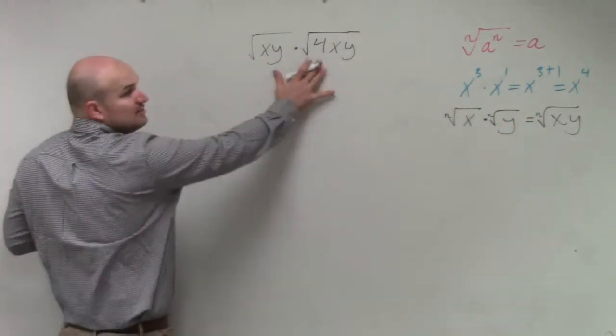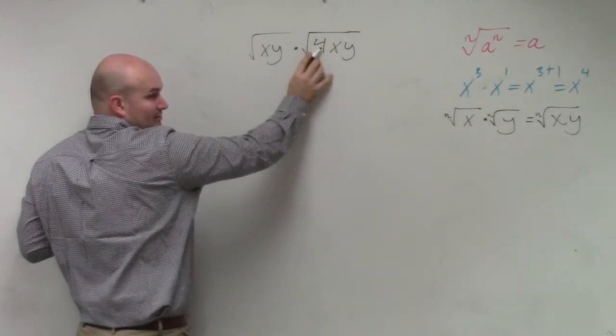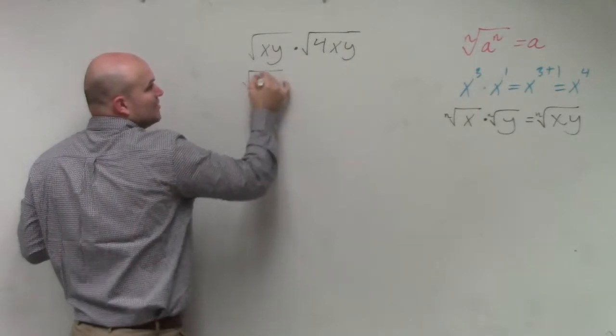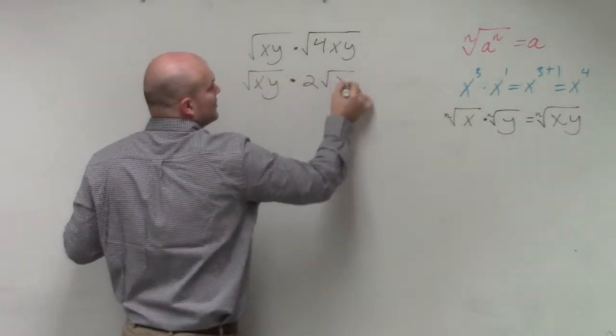So first thing I want to do is simplify. Well, I can't take the square root of xy. But I can take the square root of 4, right? So I could have this the square root of xy times 2, the square root of xy.